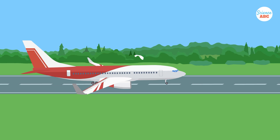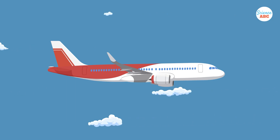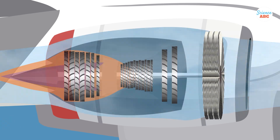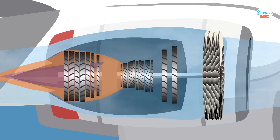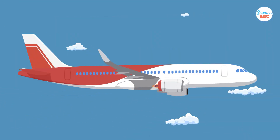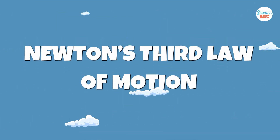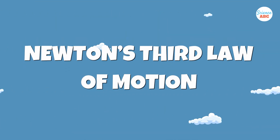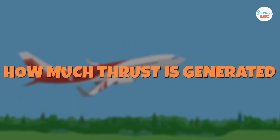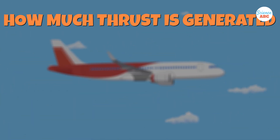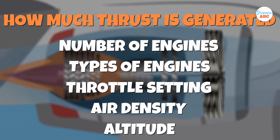An aircraft generates thrust through its engines. Commercial aircraft are typically powered by jet engines that expel air at high speeds from the back of the plane, propelling it forward — Newton's third law in action again. The amount of thrust generated depends on several factors, including the number of engines, the type of engines, and the throttle setting.